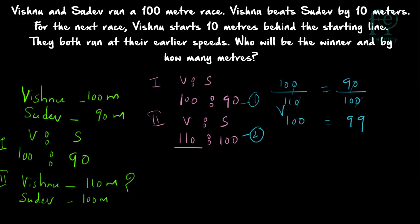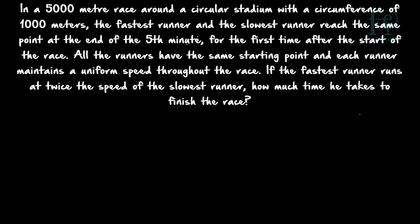That means when Vishnu has completed 100 meters, Sudev has completed only 99 meters. So who will be winning the race? Vishnu will be winning the race — no doubt. Vishnu has completed 100 meters and at the same time Sudev has run only 99 meters. So Vishnu will be winning by 1 meter, or Vishnu will be beating Sudev by 1 meter. So Vishnu will be the winner of the race.